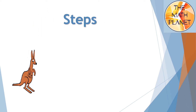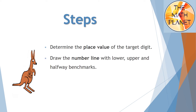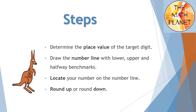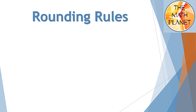The steps for rounding using the number line are as follows: first, determine the place value of the target digit — for example, the tens digit. Next, draw the number line and add the lower, upper, and halfway benchmarks on it. Then locate your number on the number line, and finally round up or round down your number.